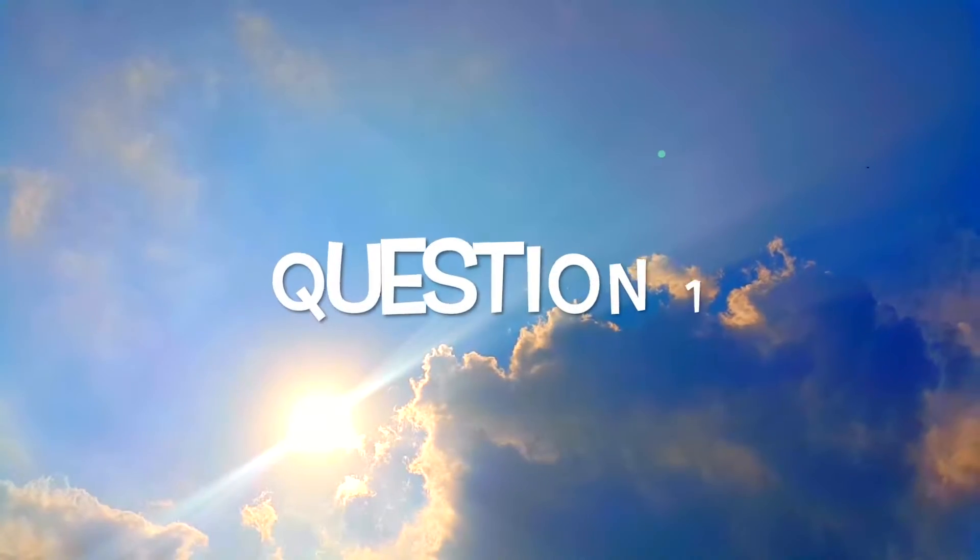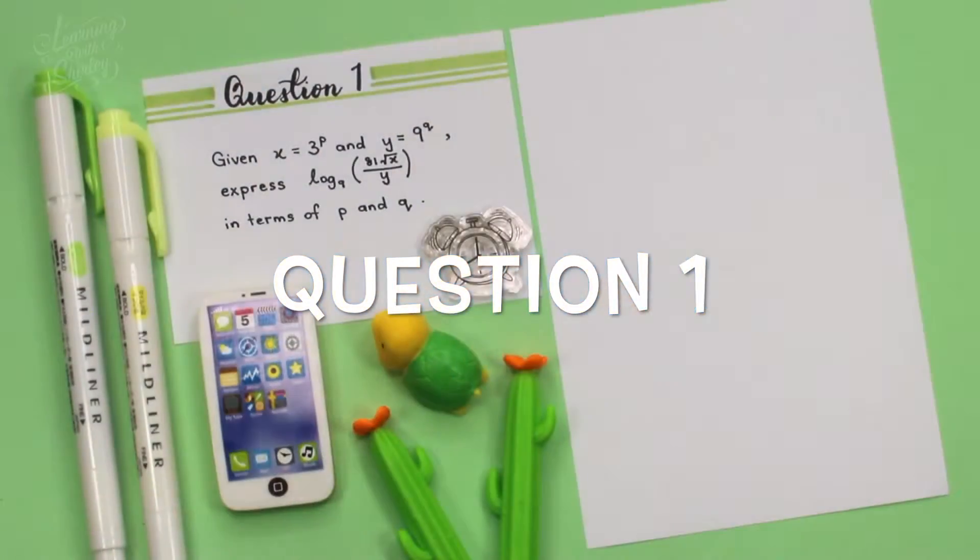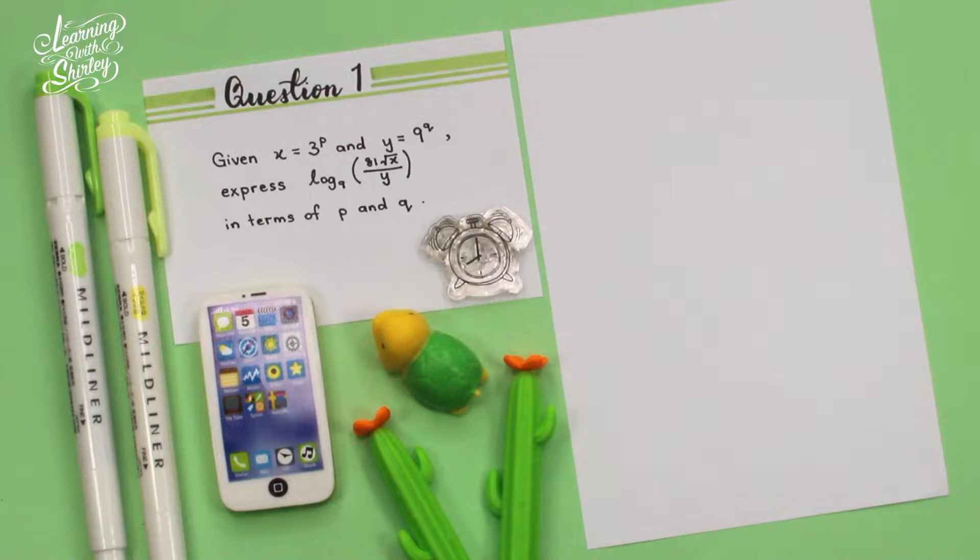Let's take a look at the first question. For question 1, given x is equal to 3 to the power of p, and y is equal to 9 to the power of q, express log base 9 of (81√x / y) in terms of p and q.